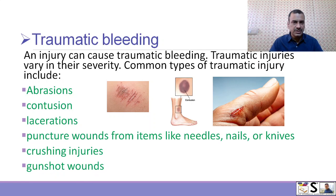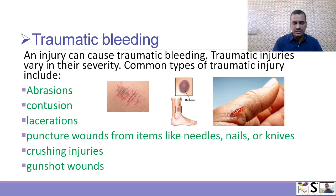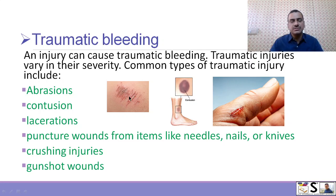First is traumatic bleeding. Any injury can cause traumatic bleeding. Traumatic injuries vary in their severity. Common types of traumatic injuries are abrasions. Abrasion is very slight or very mild trauma — you can see here, just the upper layer of skin is affected and there is very little blood loss.